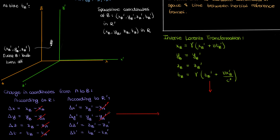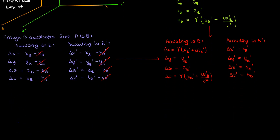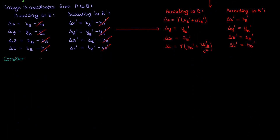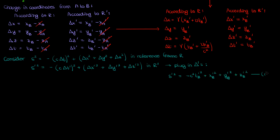If we substitute the inverse Lorentz transformed coordinates, and remember that the coordinates of event A in both the primed and unprimed frames are zero, we get a simplified result. Let's now consider a quantity s squared, given by the negative c times delta t squared plus the sum of squares of the changes in the spatial coordinates. This quantity is relative to the reference frame R. The corresponding quantity s' squared according to R' is given by plugging in the delta prime squared coordinates to get a more simplified expression — I'll call this equation 1.